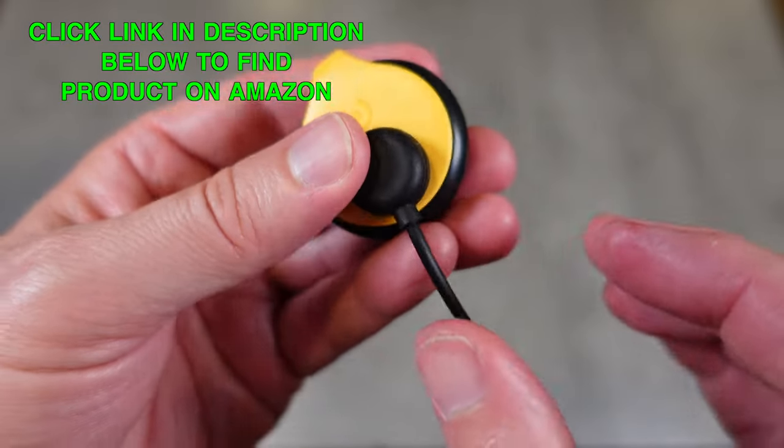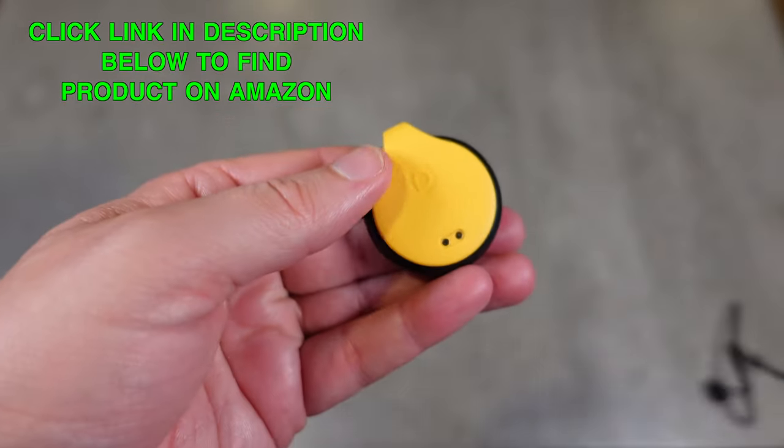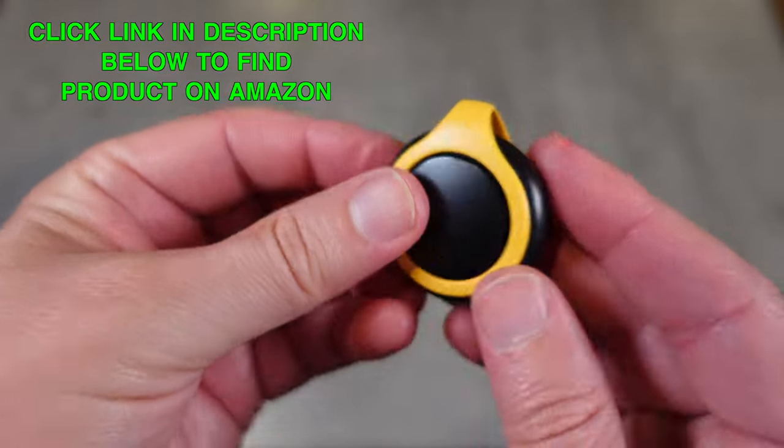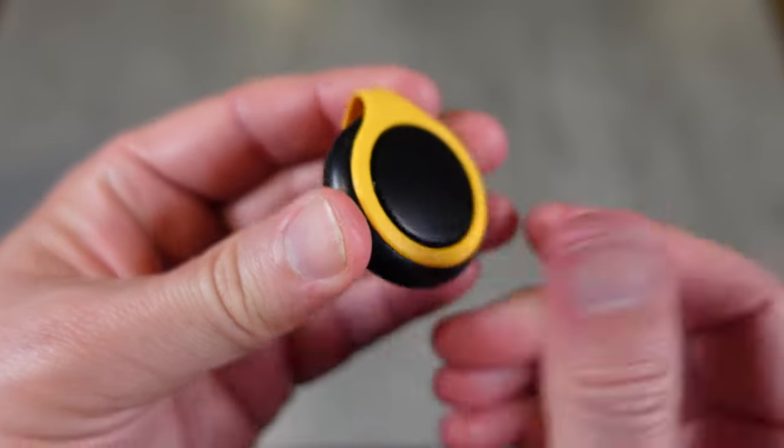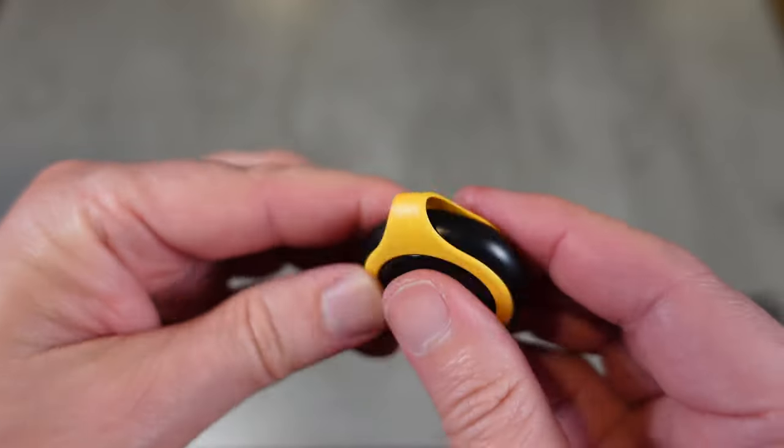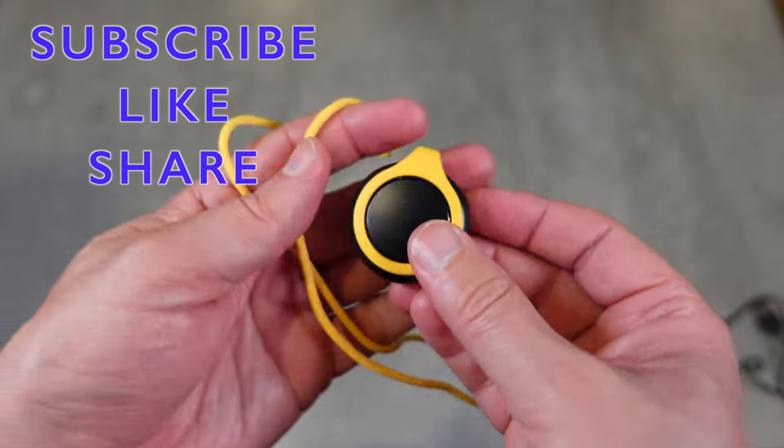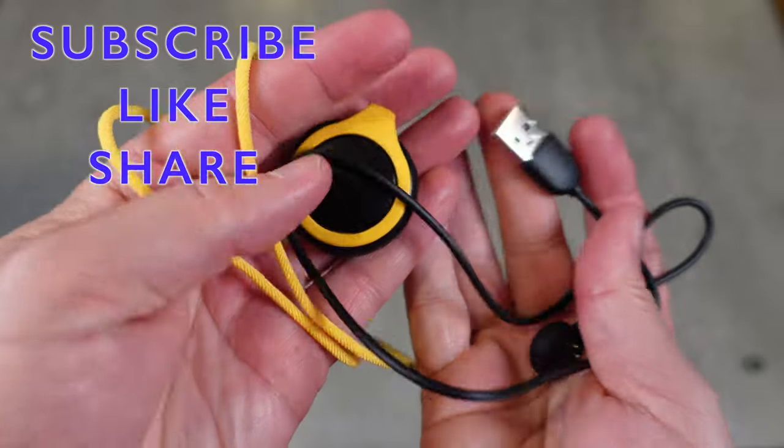It's magnetic so it goes right on there, easy enough. This is the device itself. This is a button - the multi-function button you use to control the device. Anyway, that is everything that comes in the box.